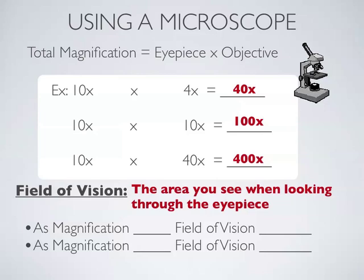And when we talk about field of vision, we're talking about the area you see as you look through the eyepiece of the microscope. That circular area is your field of vision.